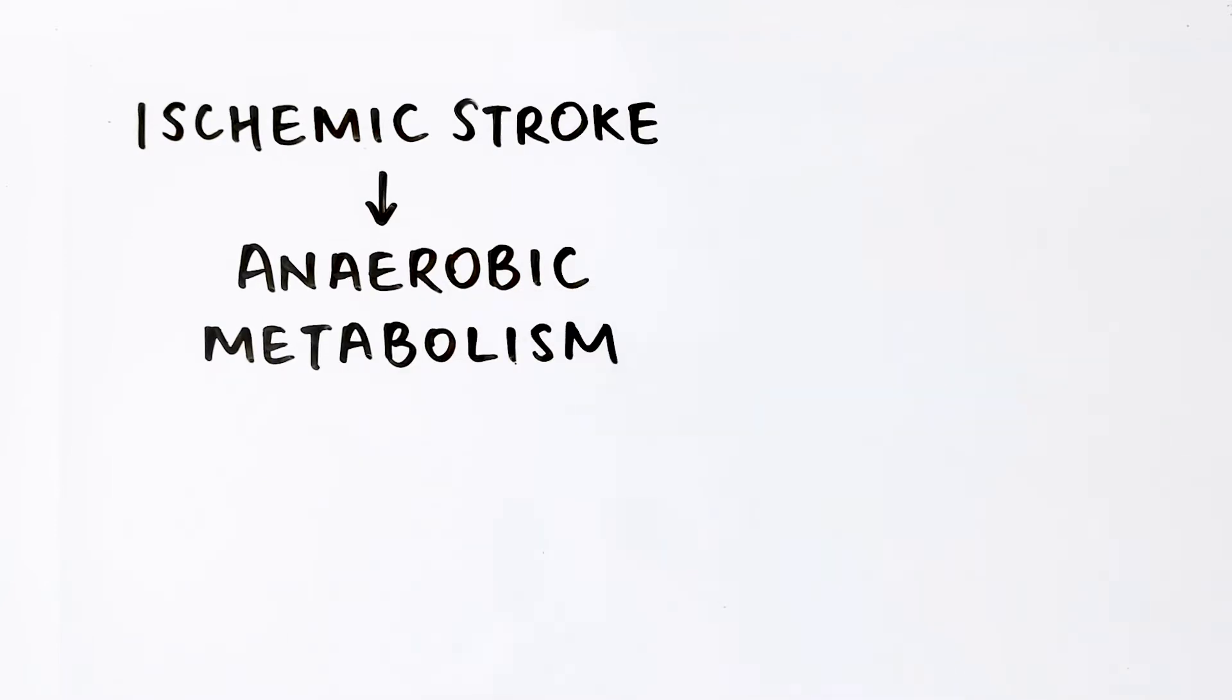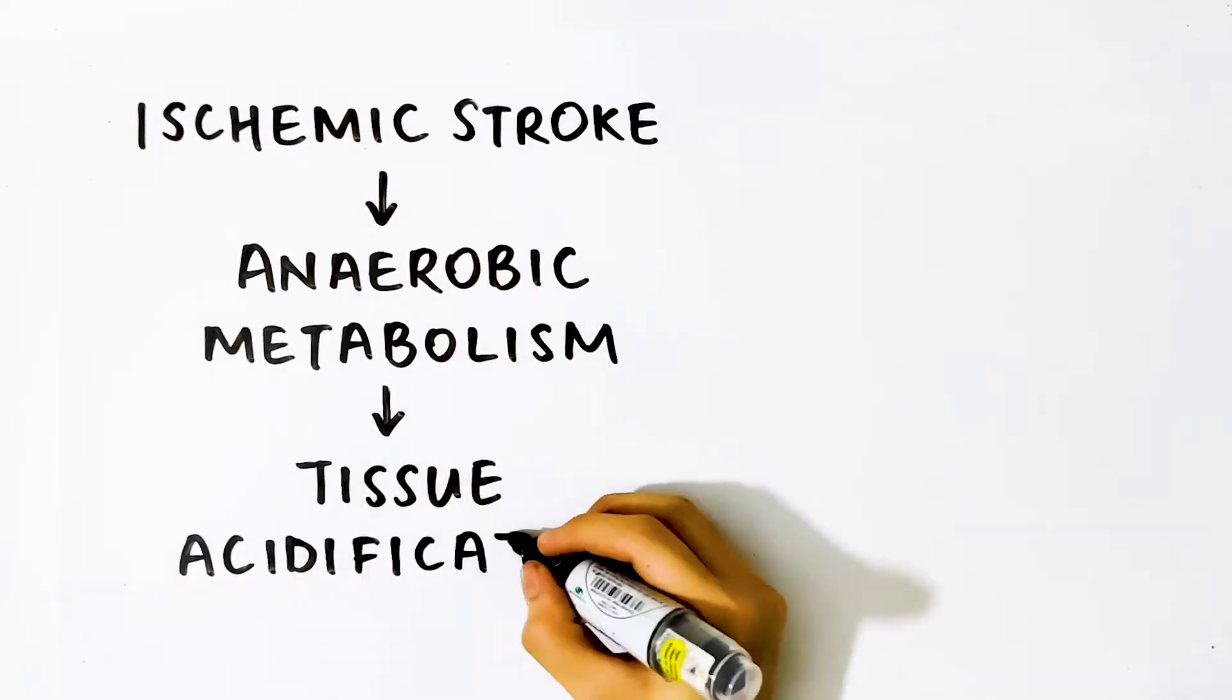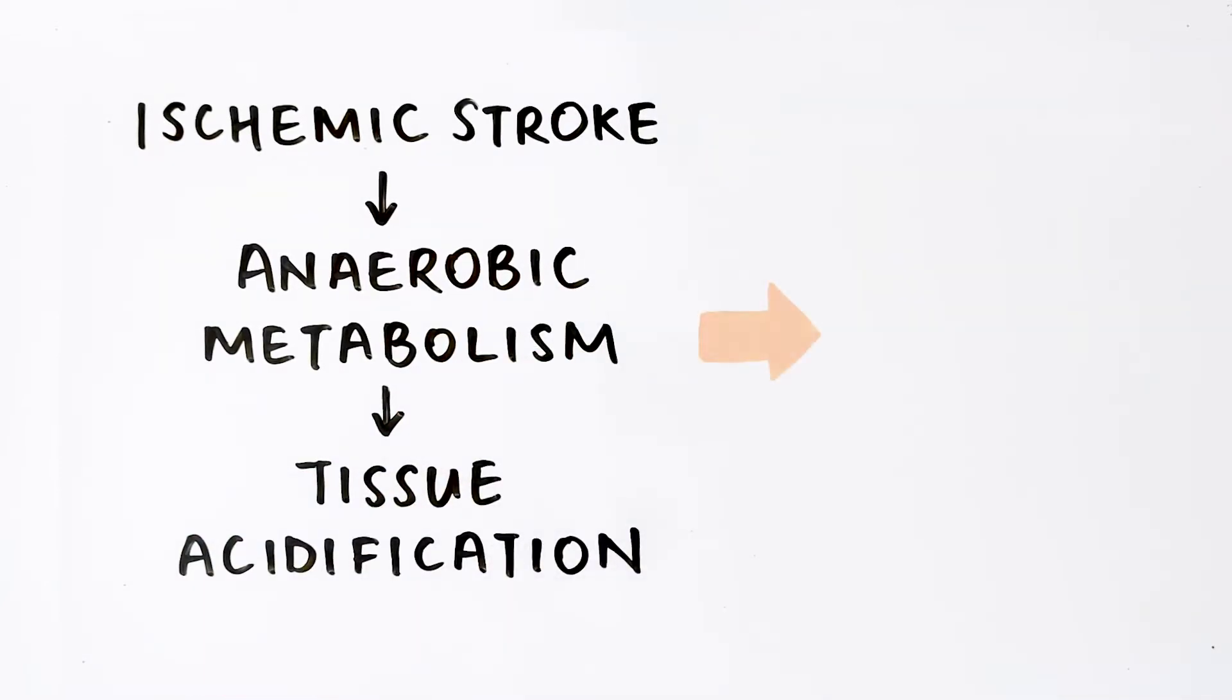During ischemic stroke, the cerebral tissue undergoes anaerobic metabolism and ultimately tissue acidification. This leads to a decrease in the intracellular pH. This suggests that tissue acidosis is one of the earliest signs that a tissue is at risk but may be potentially salvageable.